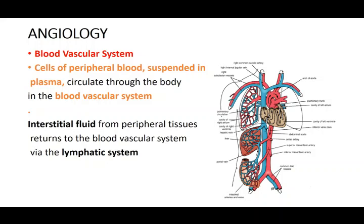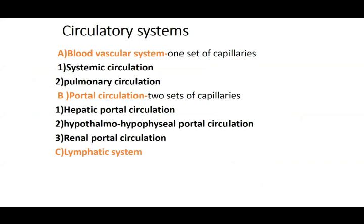The most important circulatory system in physiology is the blood vascular system. The cells of the peripheral blood are suspended in plasma and circulate throughout the body. The interstitial fluid that passes out into the tissues is returned back from the peripheral tissues to the vascular system via the veins, then returns via the lymphatics and enters back into the vascular system. It is a ring-like circulatory structure supplying nutrition to peripheral tissues and returning back.